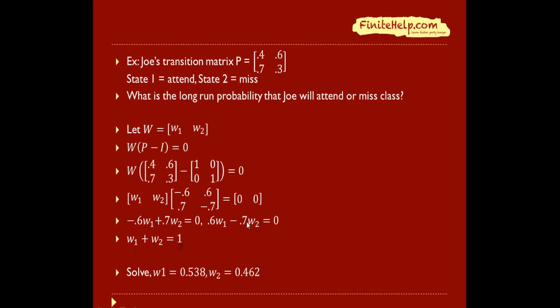Here we can ignore the second equation because this is essentially the same equation as the first. So we'll just look at these two equations and solve for it. I will assume here that you are familiar with how to solve a system of two equations and two variables. Here I've gone ahead and solved for it. W1 equals 0.538 and w2 equals 0.462.